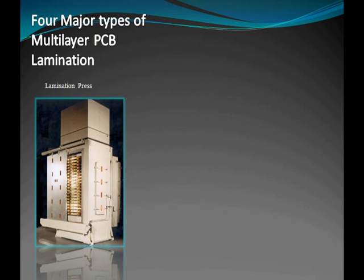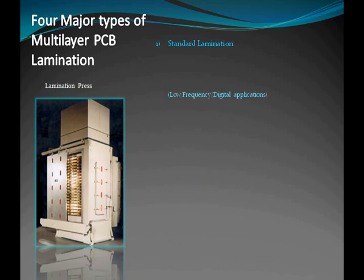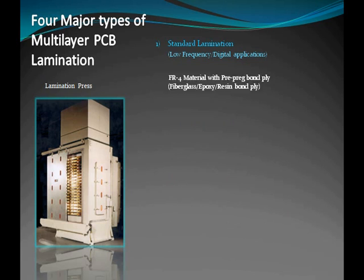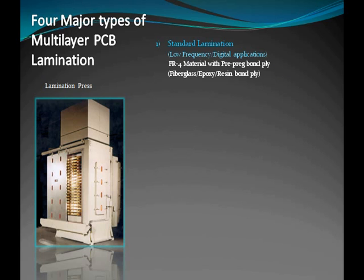In a very general sense, there are four major types of multi-layer lamination used in PCB fabrication today. The first type is standard lamination, which is typically used in low-frequency digital designs. Standard copper clad FR4 laminate is used, and pre-preg is used to bond the layers together.